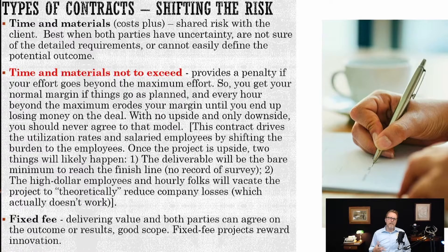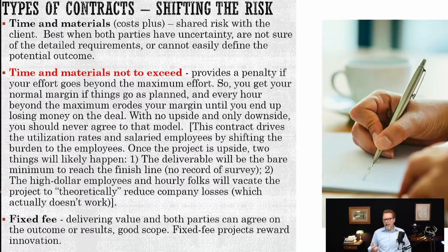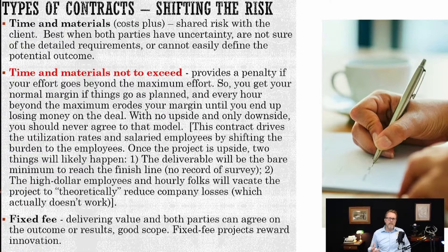Now let's talk about contracts and how businesses get their work. A lot of times in a big engineering and surveying house, the engineers own and run the company. In order to get work and secure the engineering work, they short-sell the land surveying work — meaning they don't budget enough hours to do the job properly. That's where we see a lot of illegal surveying going on: two-monument tangles, unfiled records of survey. These contracts come in as time and materials not-to-exceed, get loaded up at the beginning, and everybody's happy to be working.